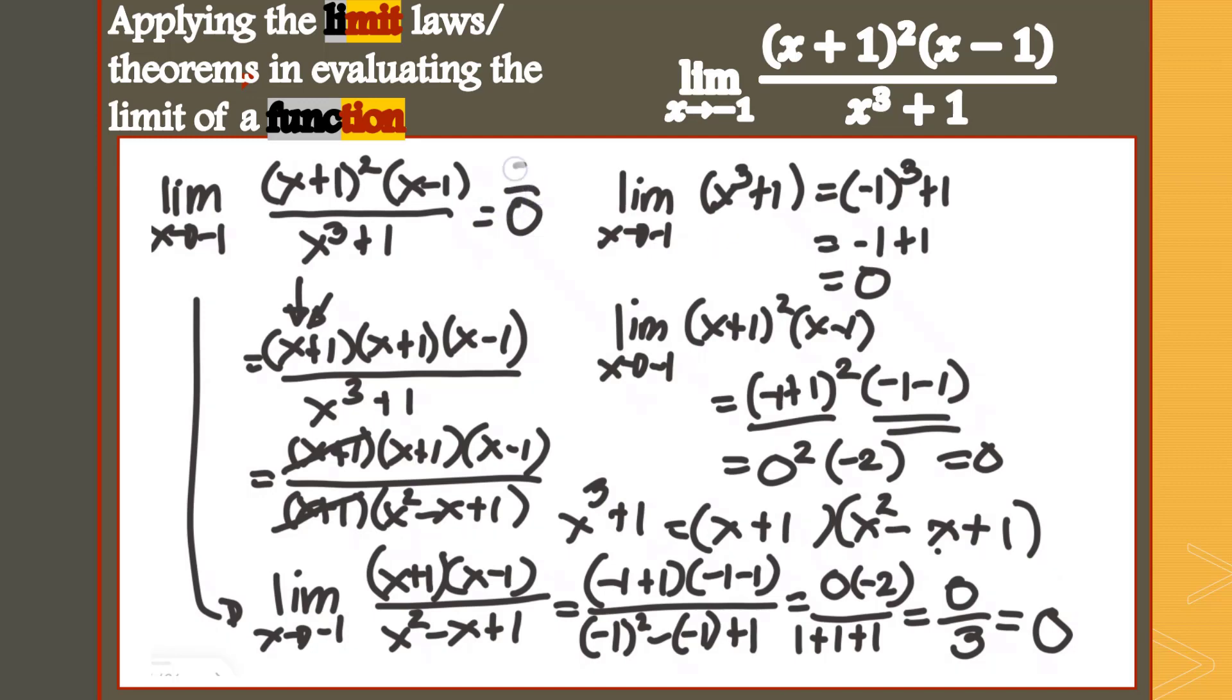So the limit of the entire expression earlier is just equal to 0. It's not 0 over 0 because we're able to remove the possibility of having 0 in our denominator. Even if our numerator is 0, it's a real number which is equal to 0. So we don't have this indeterminate form anymore. Our limit is now a real number. That's how you examine the possibility of having a limit even if the numerator is 0, but the denominator is a real number.